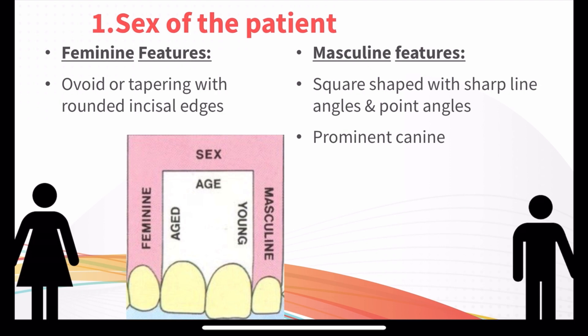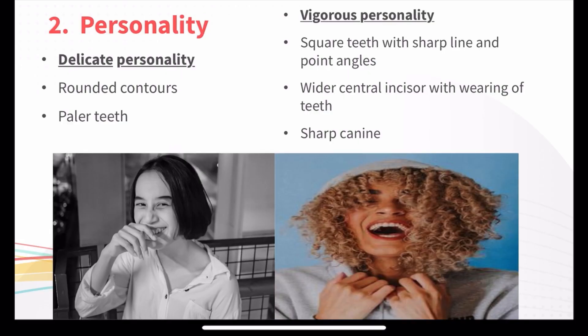In case of masculine features, you can give square-shaped teeth. Here the lateral incisor is square-shaped, and you can give sharp line angles and point angles. You should also give a very prominent canine.